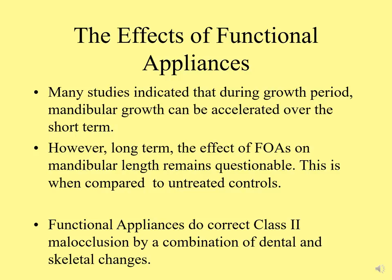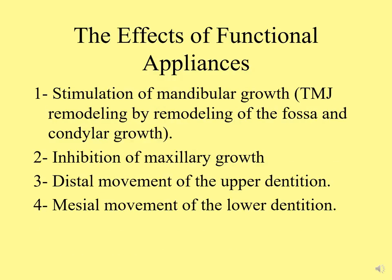According to the literature, many studies indicate that in growing individuals, mandibular growth can be enhanced over the short term; however, long-term mandibular length remains questionable when compared to untreated controls. In general, functional appliances do correct Class II by a combination of dental and skeletal changes: stimulating mandibular growth, allowing TMJ remodeling and condylar growth, inhibiting maxillary growth like a headgear effect, distal movement of the upper dentition, and mesial movement of the lower dentition.